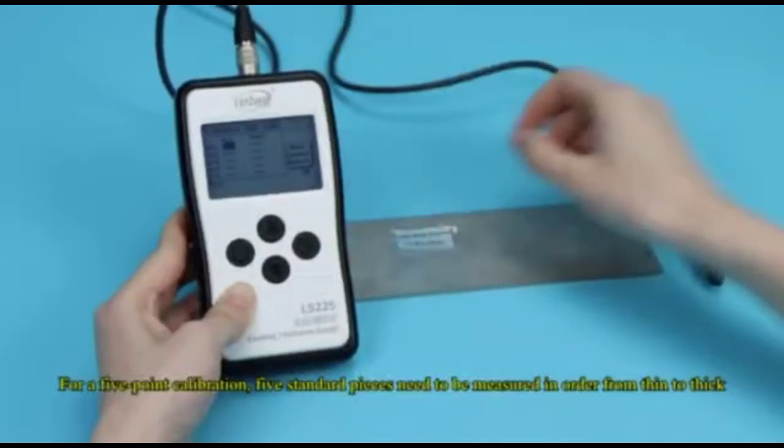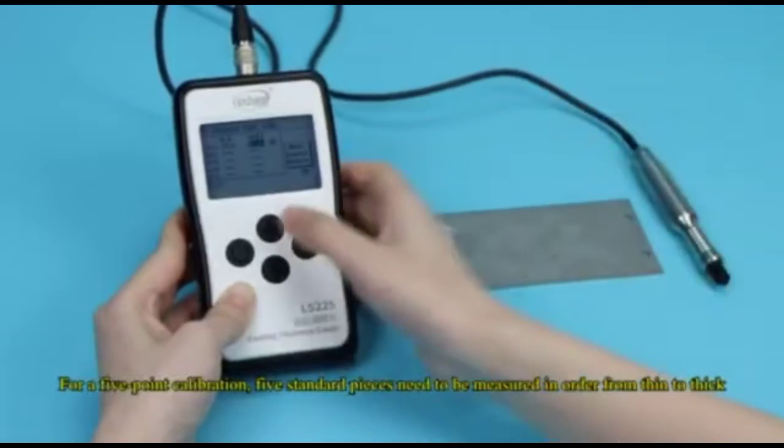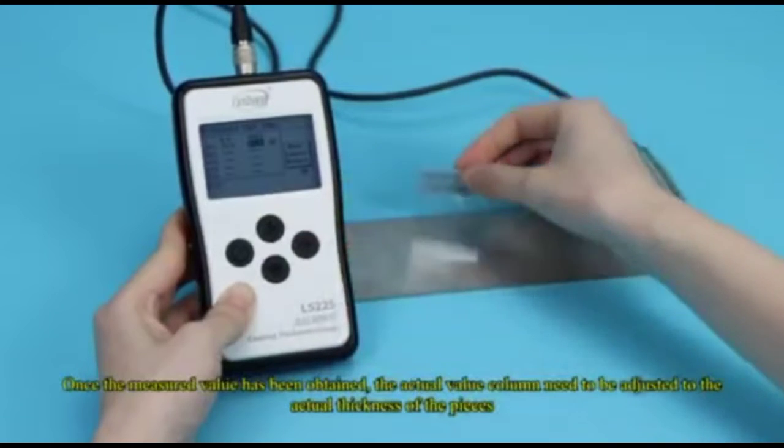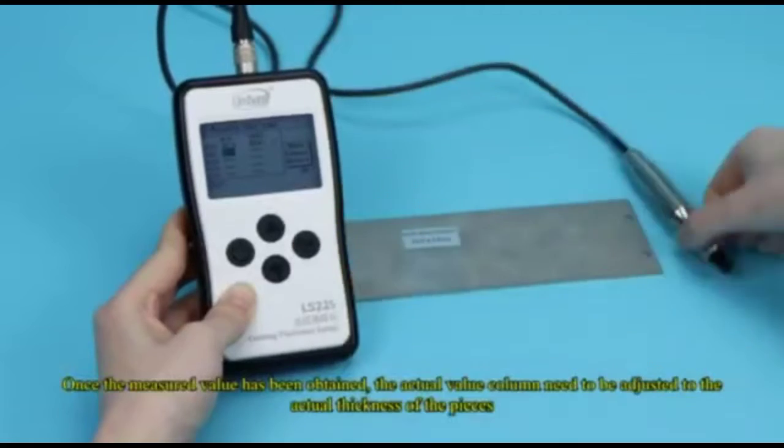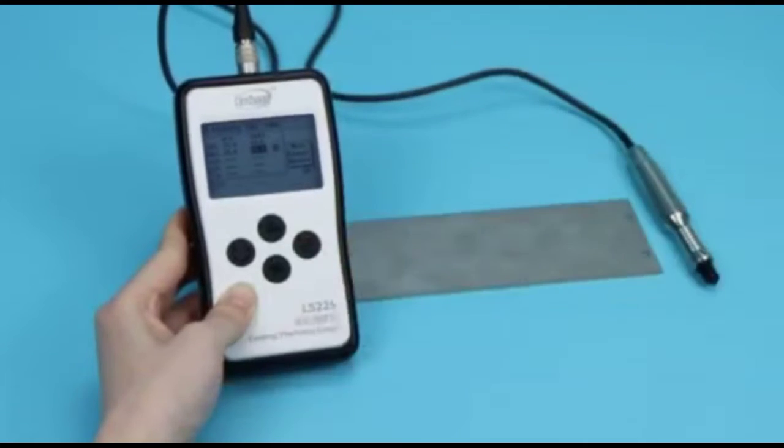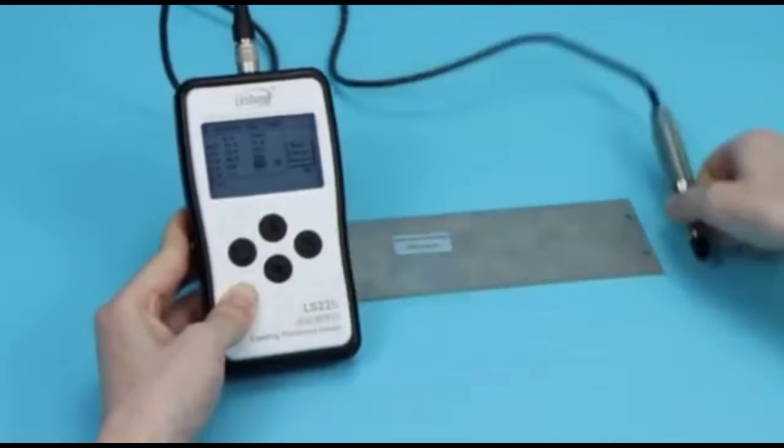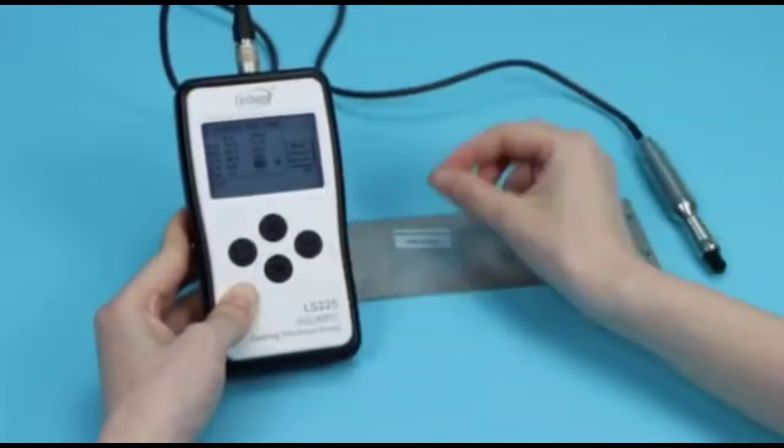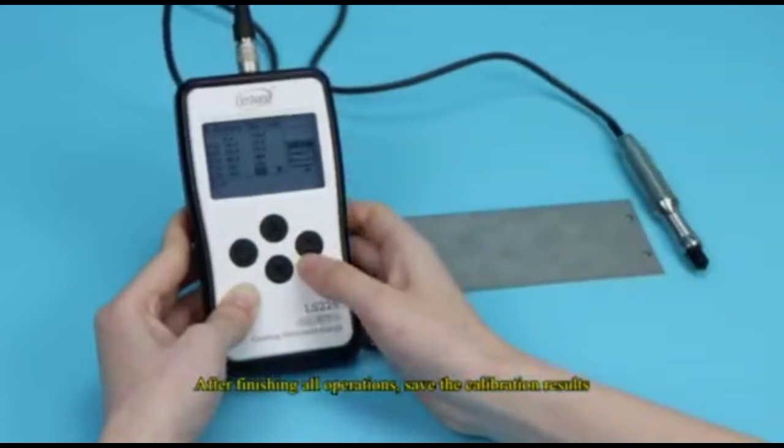For a five-point calibration, five standard pieces need to be measured in order from thin to thick. Once the measured value has been obtained, the actual value column needs to be adjusted to the actual thickness of the pieces. After finishing all operations, save the calibration results.